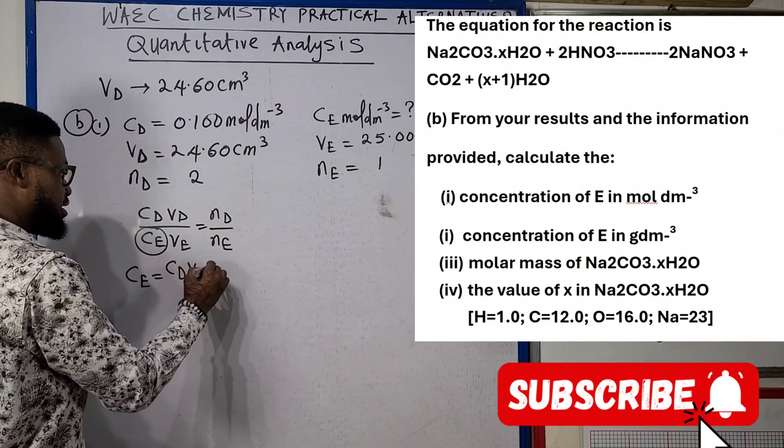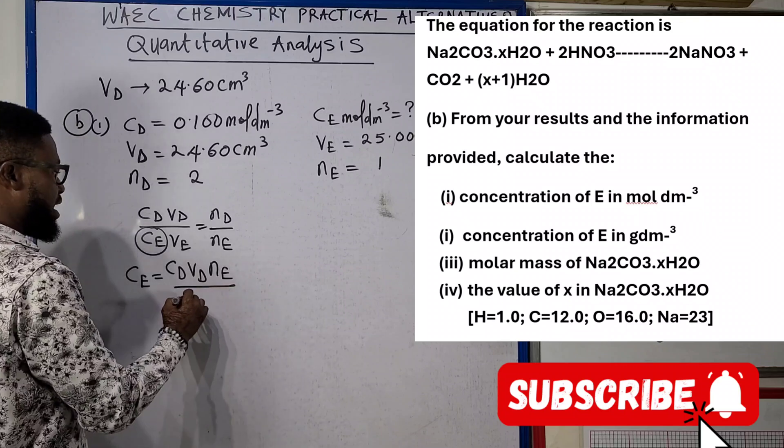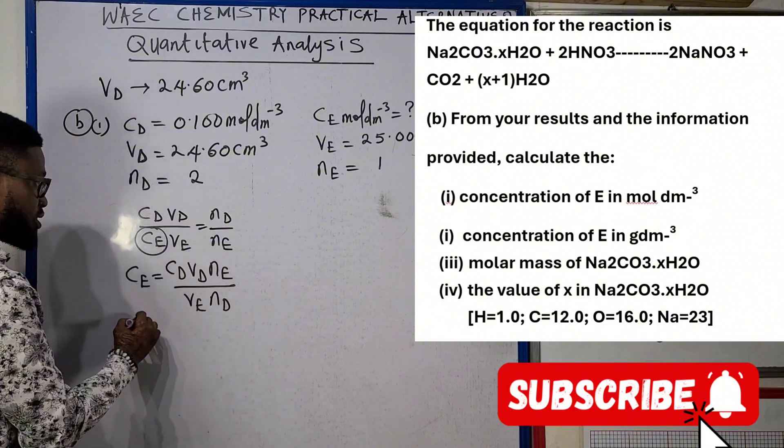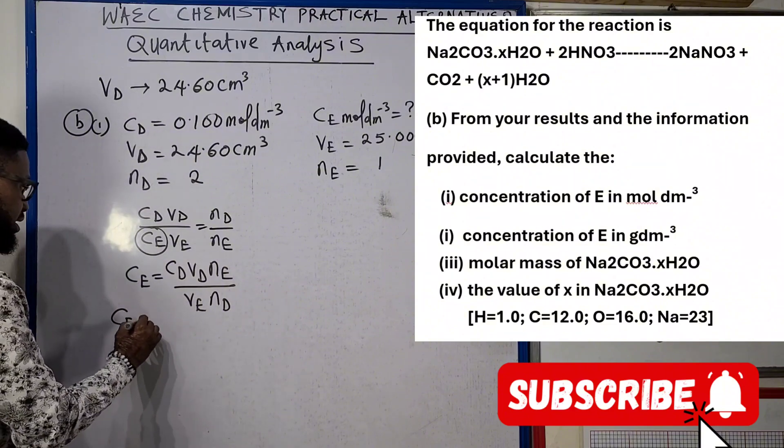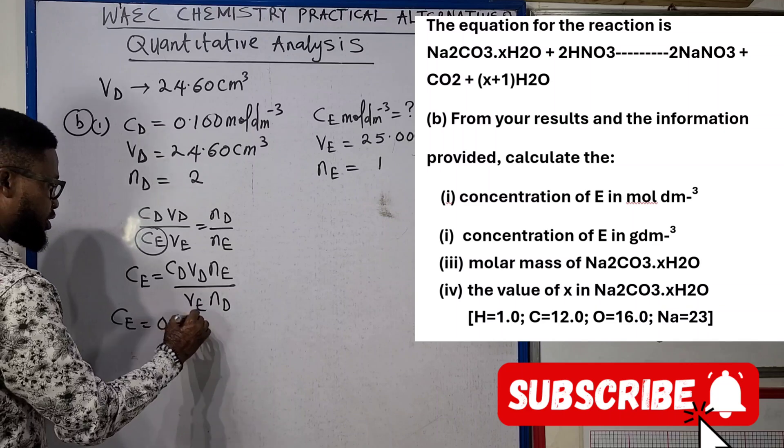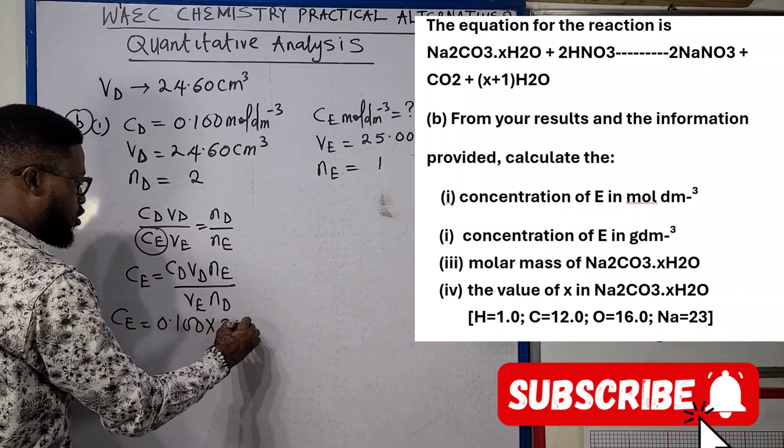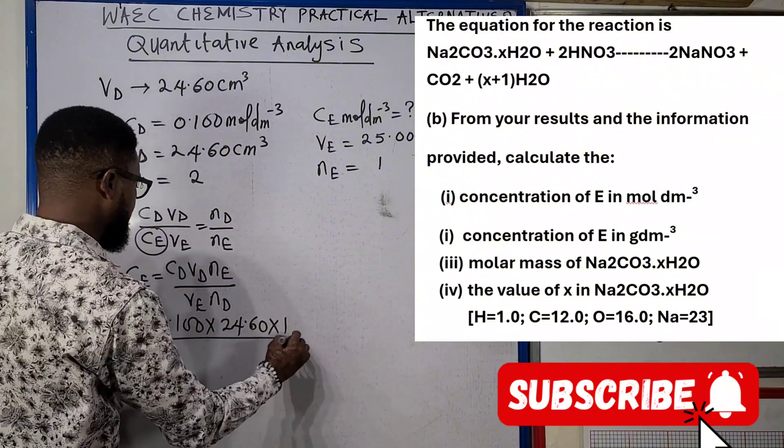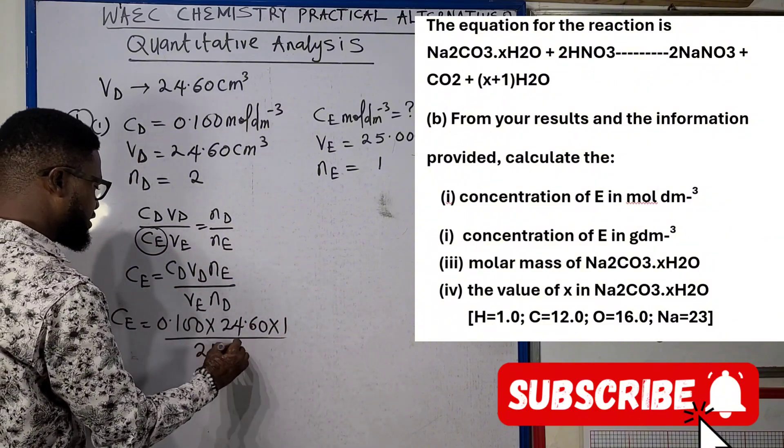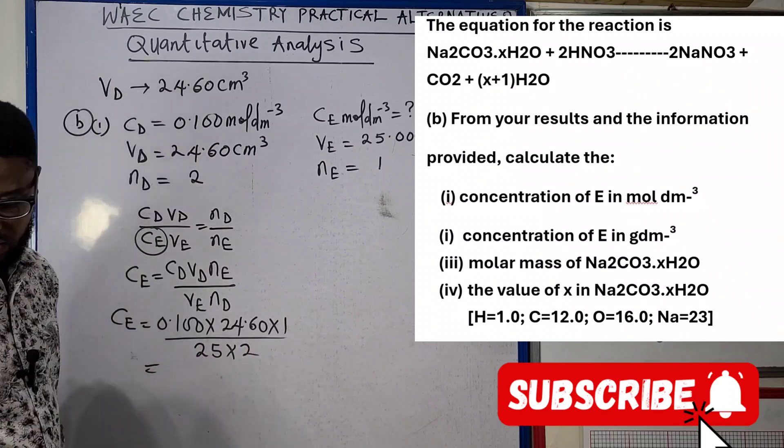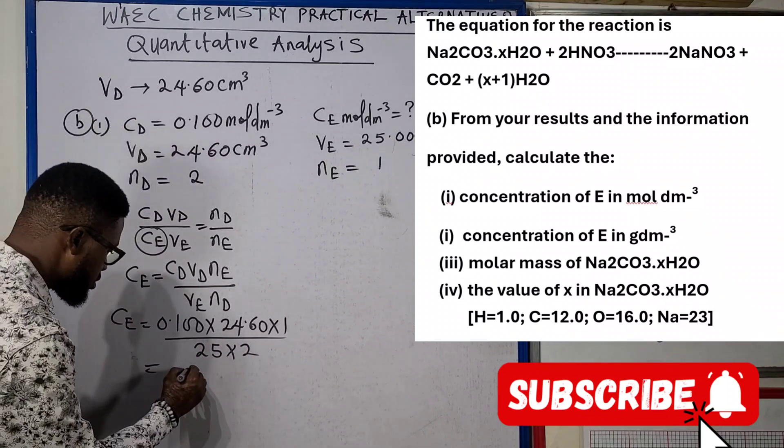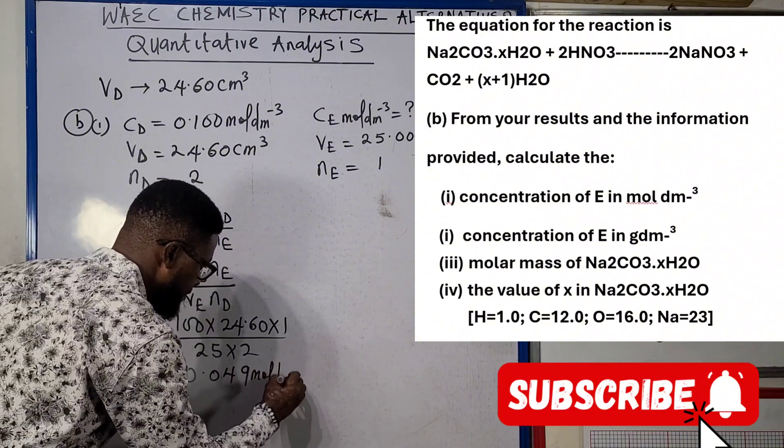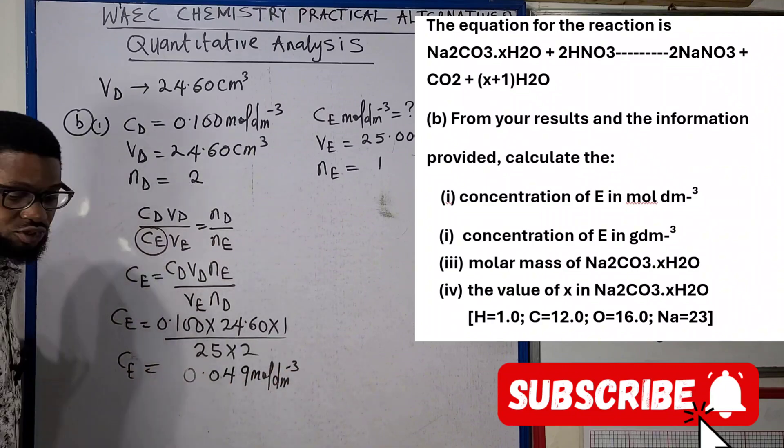My CE equals to 0.100 times 24.60 times my NE which is 1, divided by 25 times 2. If you compute this from your calculator, you're going to get 0.049 mole per dm³. That is what our concentration of E is going to be.